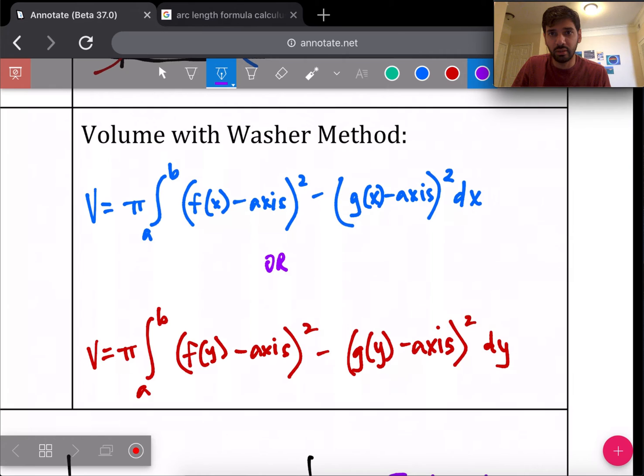Volume with the washer method. Essentially the washer method is two disk methods. As you can see, there's still one integral, but if you notice there's pi, there's an R squared here, and there's another R squared here. And that pi can be distributed to both of them. Since it is an integral, you could do pi R squared for the first one minus pi R squared for the second one. It could be two integrals technically, or you could just write it as one big integral like this. Either way you'll get the right answer, but it's two disk methods essentially. Washer method is two disk methods. You're integrating a larger disk, a bigger radius, and then there's another small radius in there that you're subtracting out of that, and it creates air space inside of it.